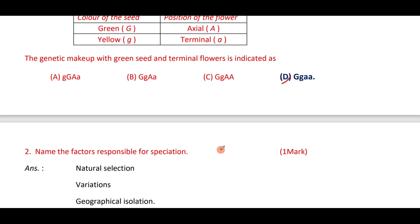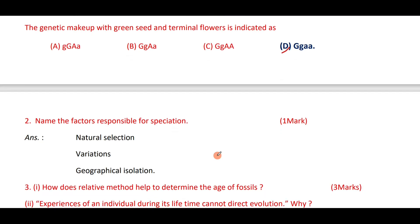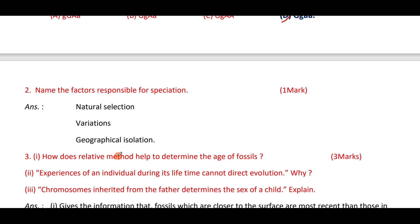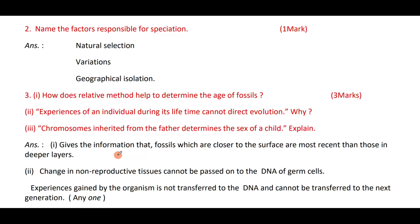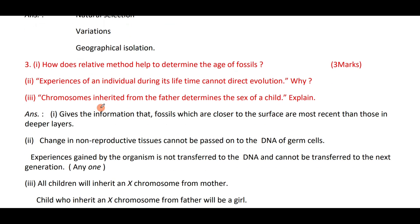Name the factors responsible for speciation. The factors responsible for speciation are natural selection, genetic drift, geographical isolation, and variation. How does the relative method help to determine the age of fossils? It gives the information that fossils which are closer to the surface are more recent than those found in the deeper layers.